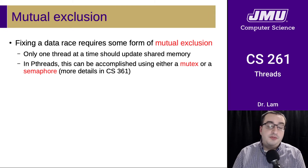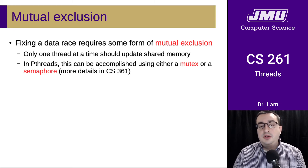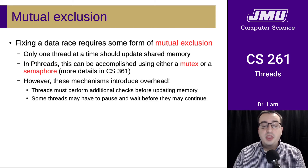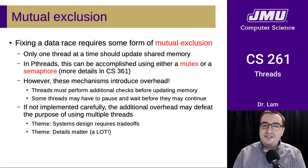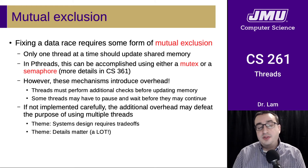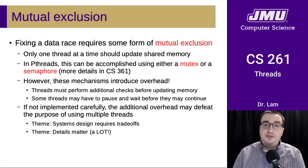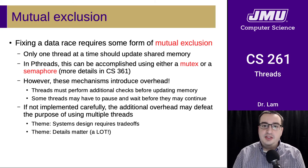You could also use something called a semaphore. You will spend time in the next class, CS361, learning about how these mechanisms work and applying them to various concurrency and synchronization problems. These mechanisms introduce some overhead — if threads can't run at the same time, one has to wait for the other to finish. Threads must perform additional checks and potentially pause before entering a mutually exclusive region. If not implemented carefully, the overhead may actually defeat the purpose of using multiple threads. This brings us back to core themes: systems design requires trade-offs. To get correctness, we sometimes have to give up performance. Details matter a whole lot — it is sometimes extremely tricky to get these things working exactly right.